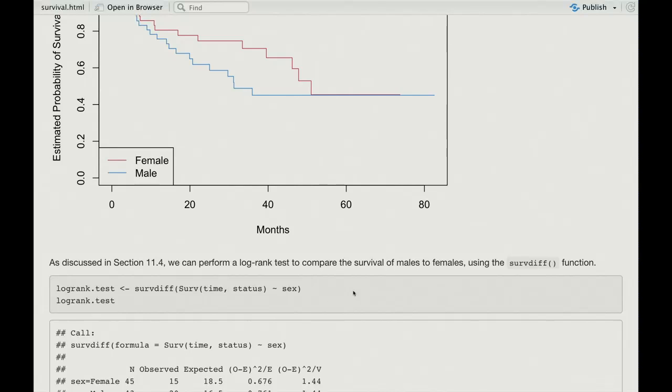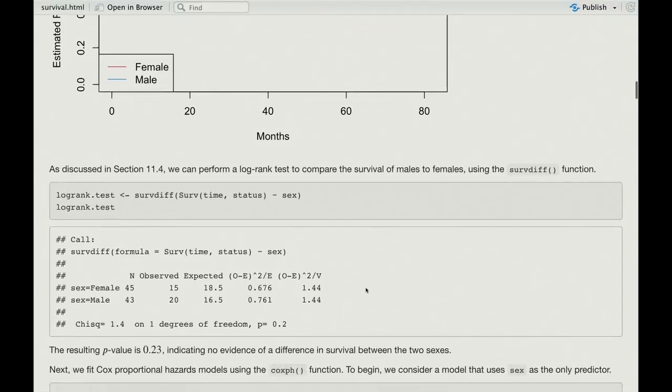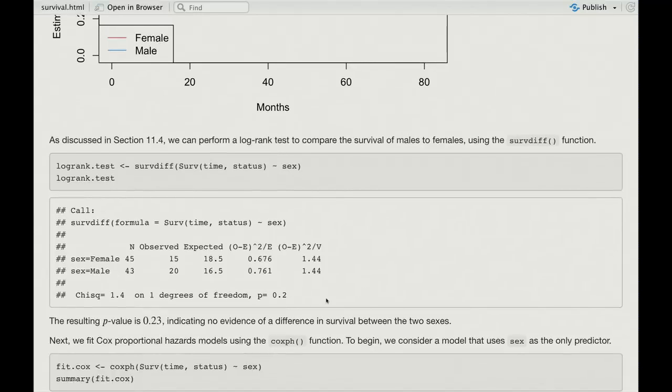So the first thing we do is perform a log rank test to compare the survival times of males to females. And that was described in the text. And there's a function survdiff that does that for you. And it uses the same response object created by Surv. And twiddle sex tells you that you're doing a log rank test to test if the males are different from females. And then you print out the results. And it seems like it's not significant. The p-value is 0.2. And one thing to remember with censored data is, oh, the sample size was 88, sounds pretty big. The actual amount of information is really more to do with the number of failures, right? The number of events, which was only half of that. So the real sample size is a lot less than 88. And that's why we're getting maybe, you know, this, although the curves look pretty different, the p-value is not significant.